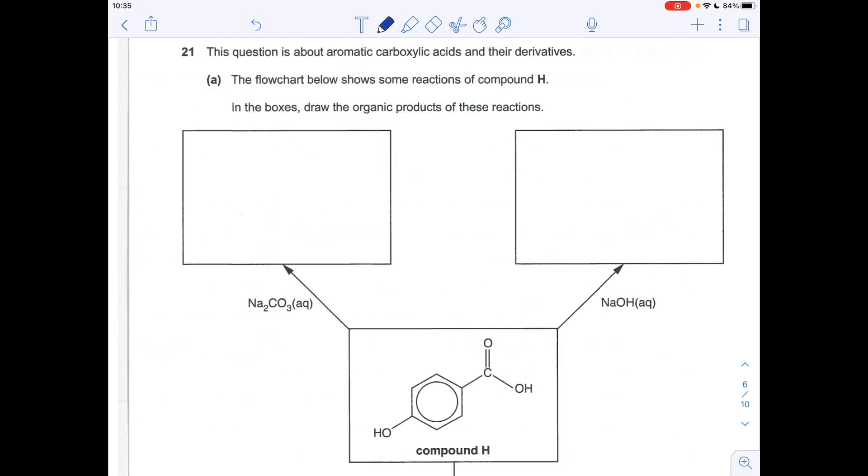So moving on to the final question, split over two pages, this one. It's about aromatic carboxylic acids and derivatives. So starting in the middle, compound H, notice we've got a phenol, OH groups directly attached to the benzene ring. So phenol group and a carboxylic acid group.